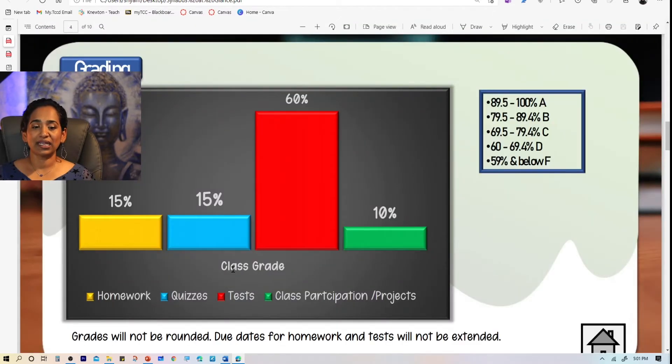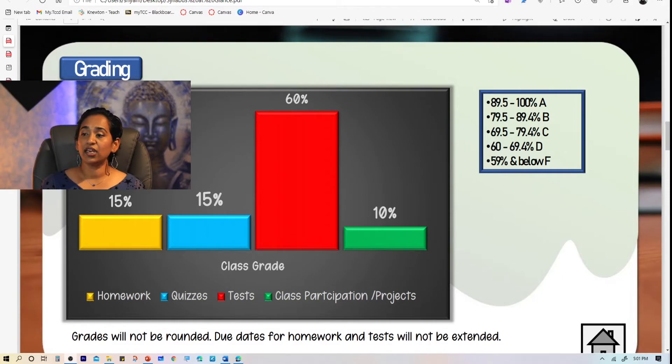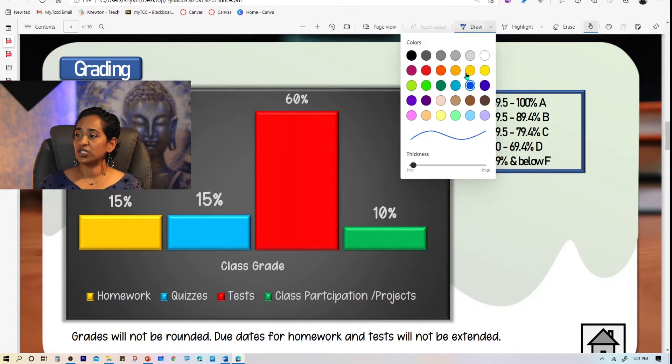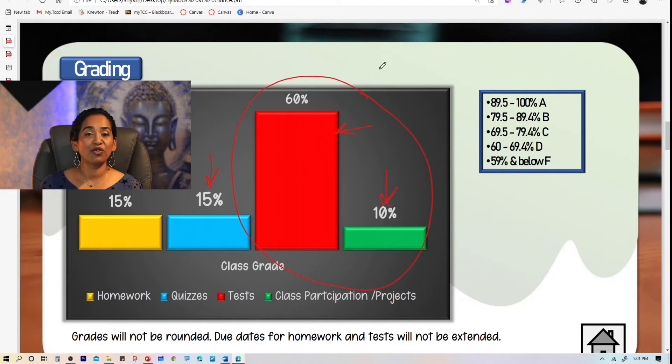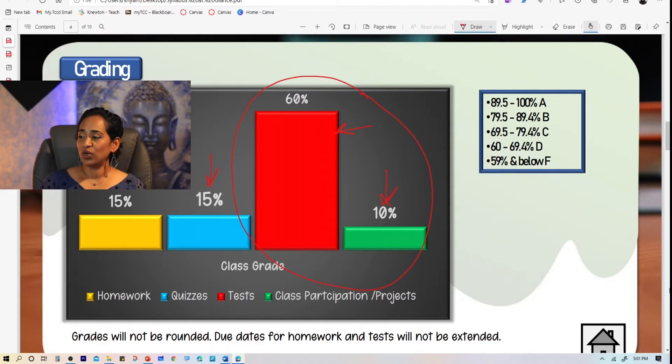So let me go ahead and click on grading. Let's say I'm demonstrating this to my class. And I'm going to say this is grading. And please pay attention that your test grades are 60%, your class participation is 10%, and your quiz is 15% and your homework is 15%. So you can be using this as a PowerPoint presentation, but in your Edge browser. And at the same time, highlighting whatever you want your students to see. Once it's done, I'm going to uncheck the draw button.